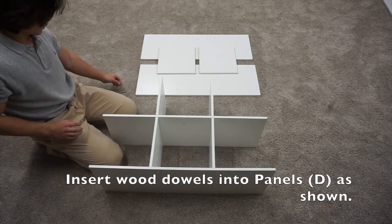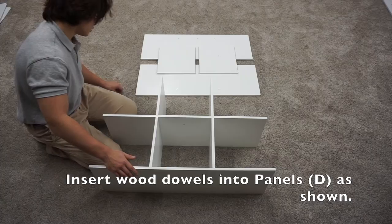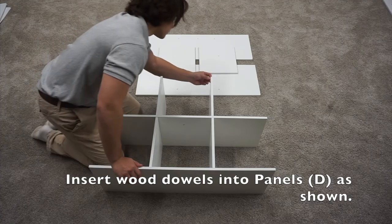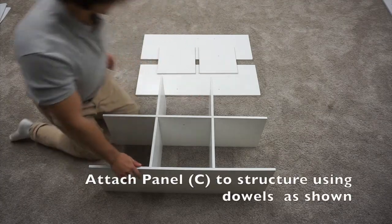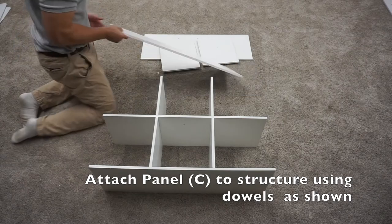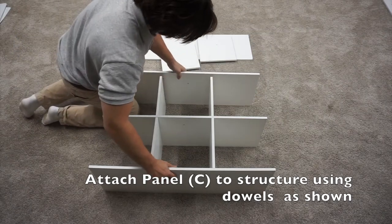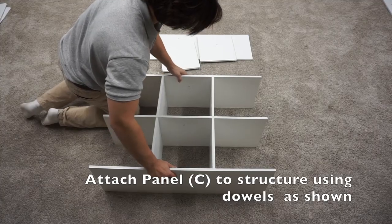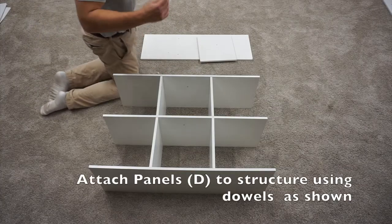Then, four more of the long wooden dowels and another C panel. And then, two of your D panels.